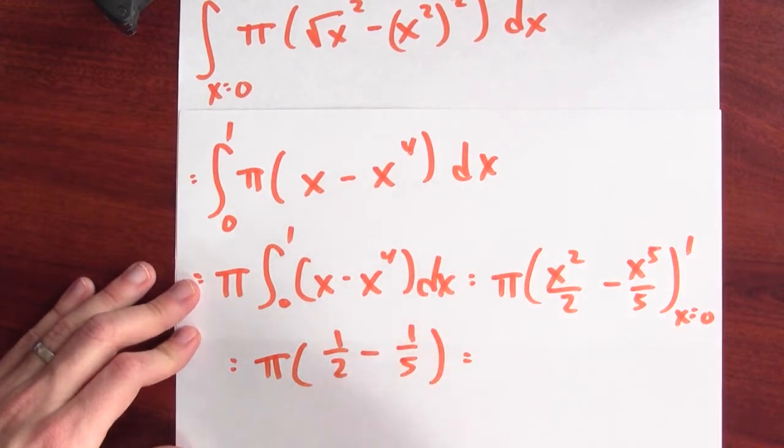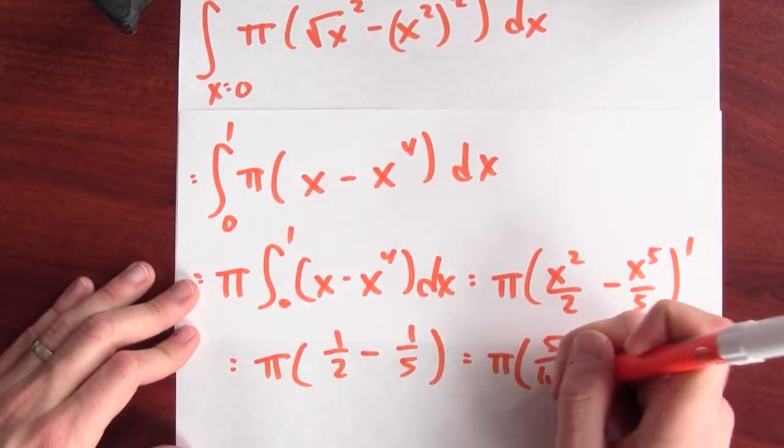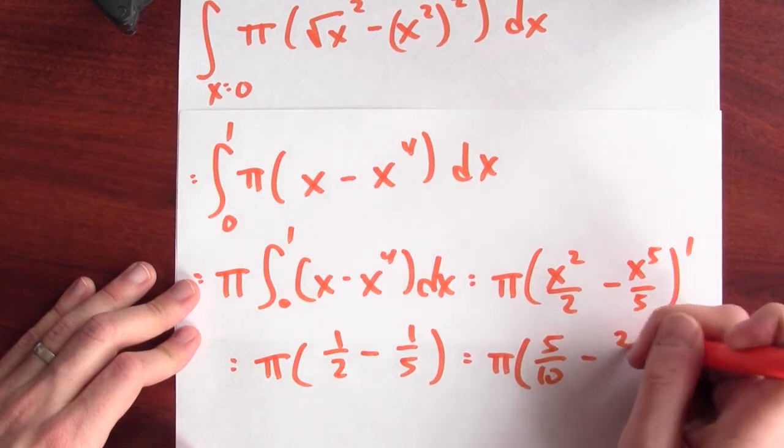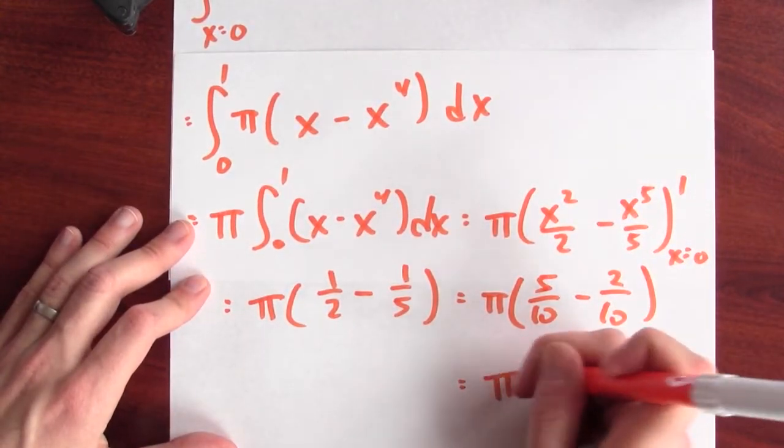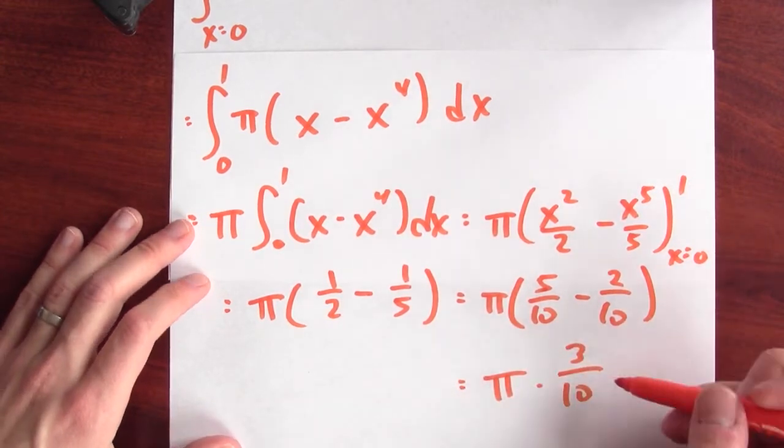And if I like, I could write this as a single fraction. This is π times 5 tenths minus 2 tenths, or all together, π times 3 tenths.